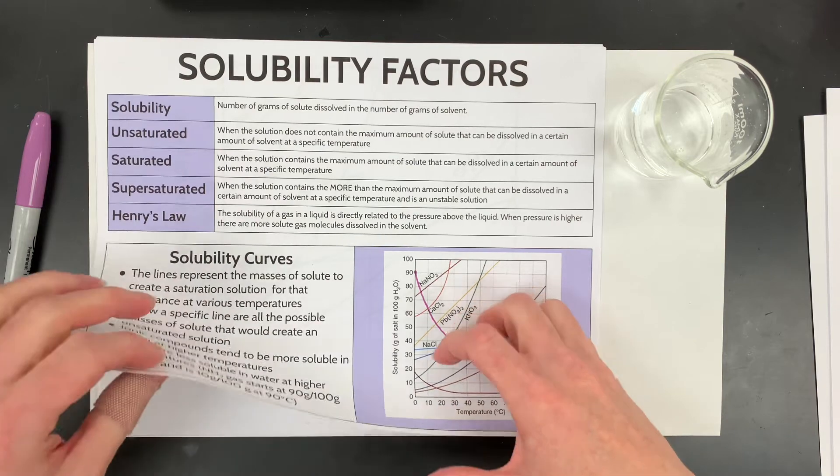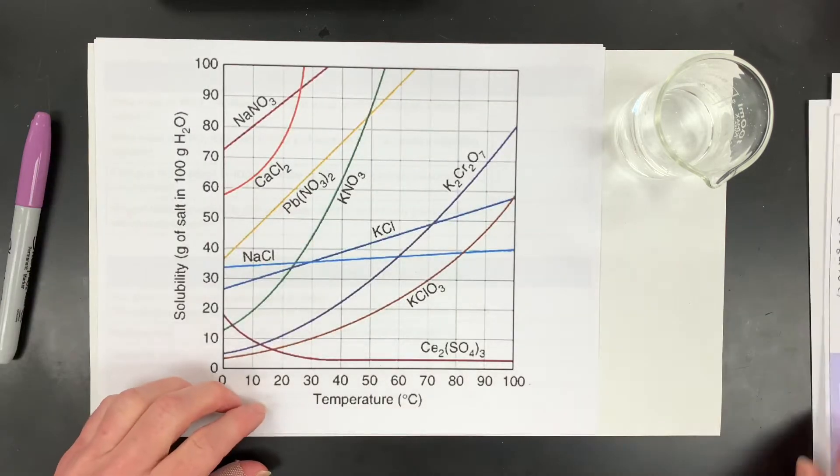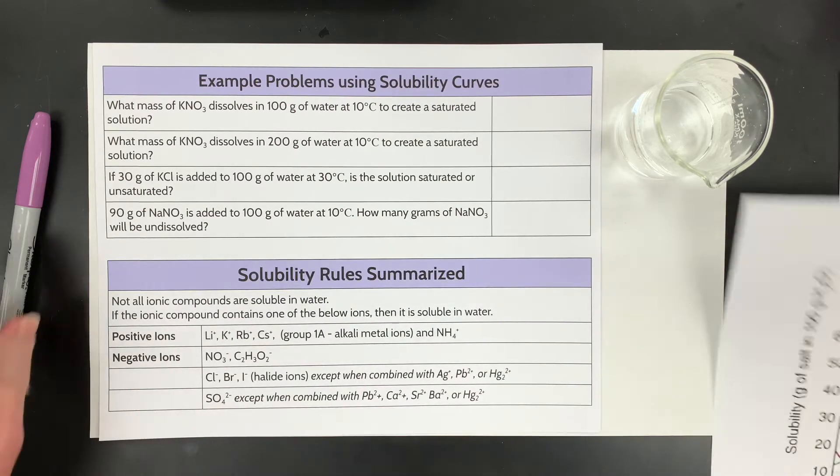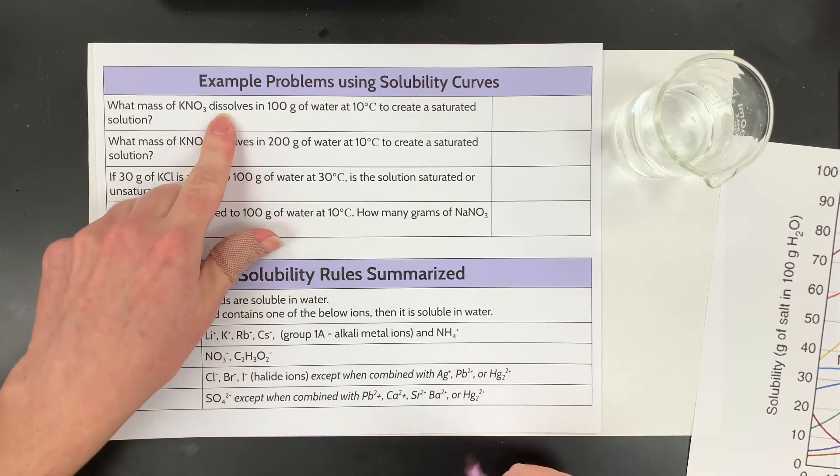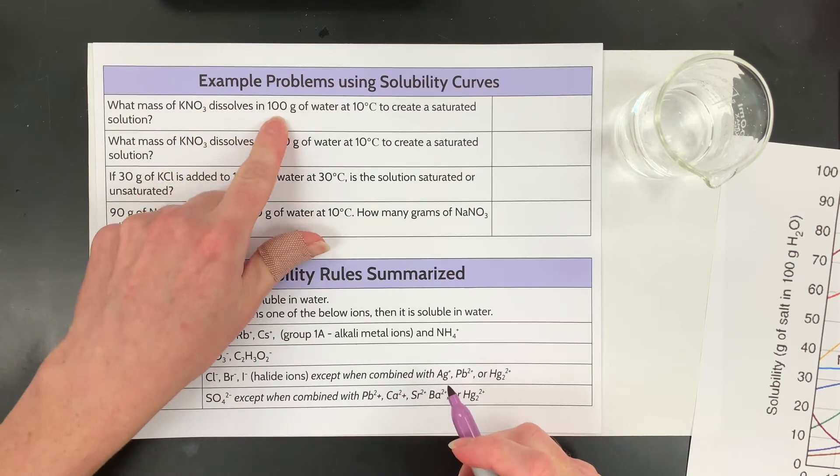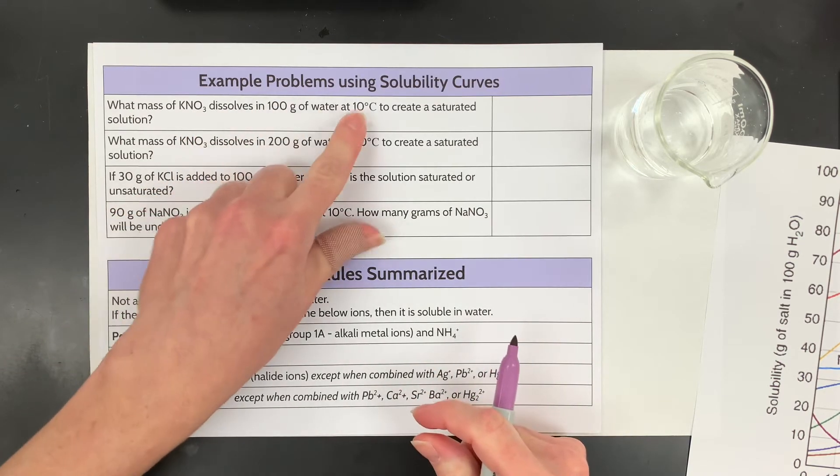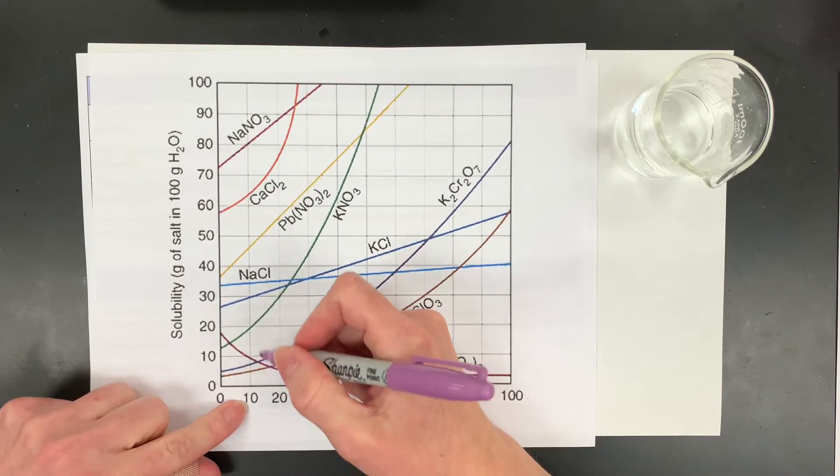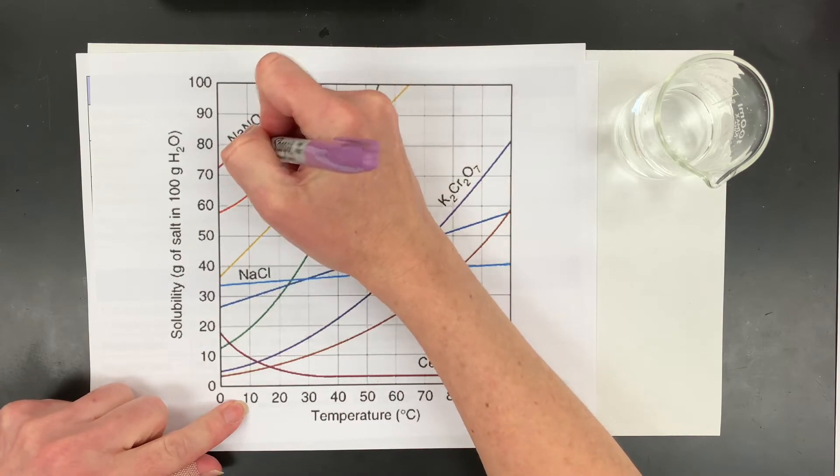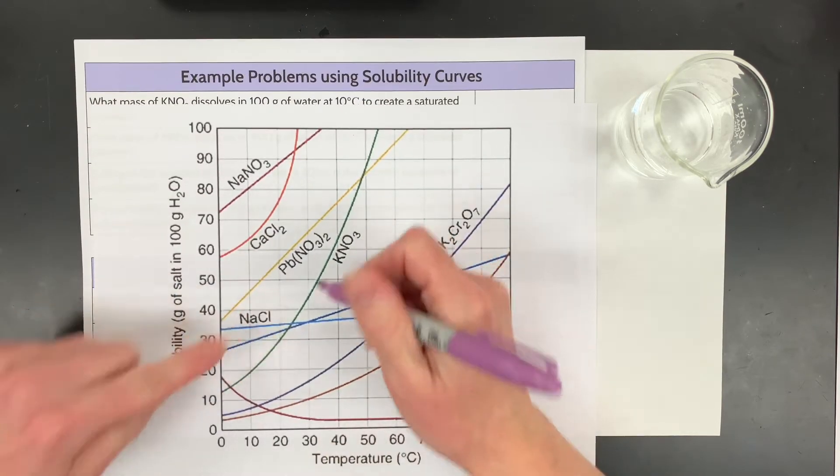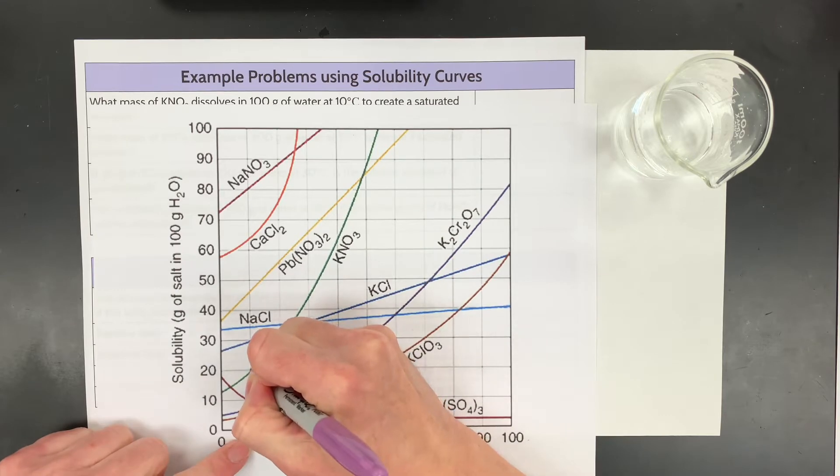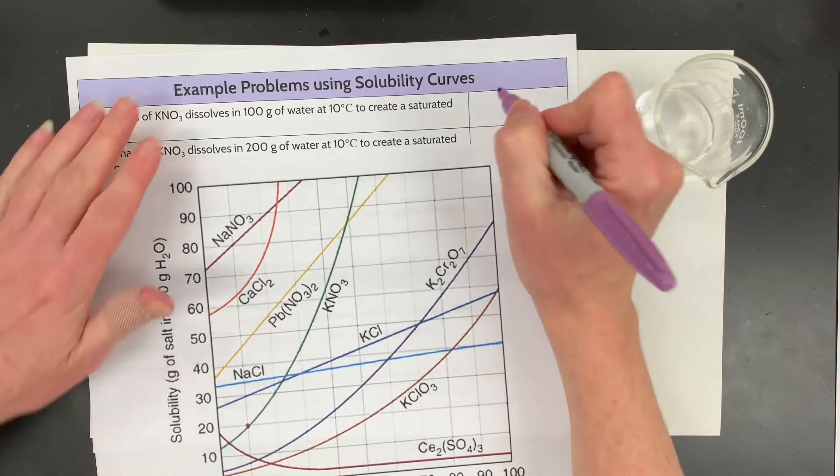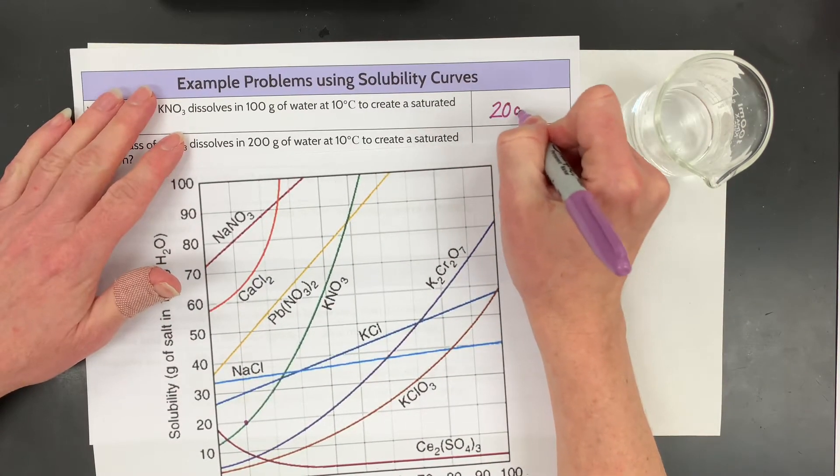All right, so let's go over some example problems. So I made a bigger chart here so we can kind of draw on it. So the first thing we're going to do is we're going to answer this problem which is if we have potassium nitrate, we have 100 grams of water, that's the same as the axes, and we're at 10 degrees, and it's at a saturated solution. And then which one were we going to look at? Potassium nitrate, I almost went to the wrong one, which is right here. And that means 20 grams approximately dissolves in that solution. So you just say the answer was 20 grams for that first one.